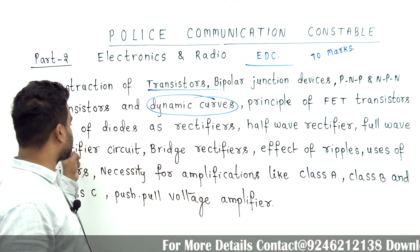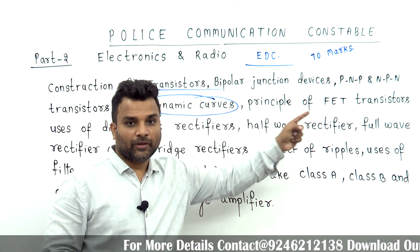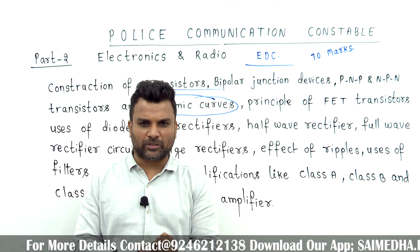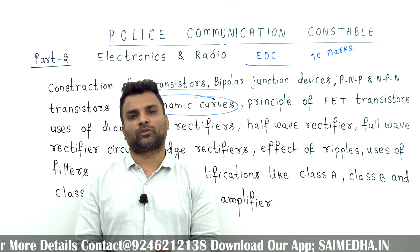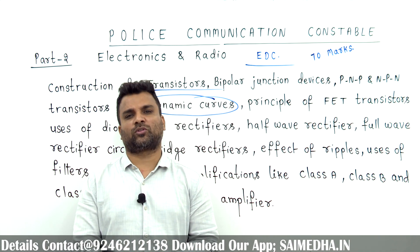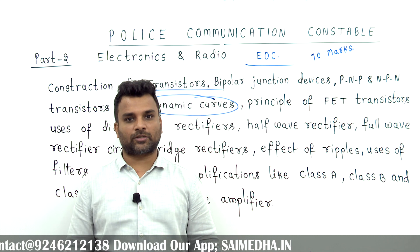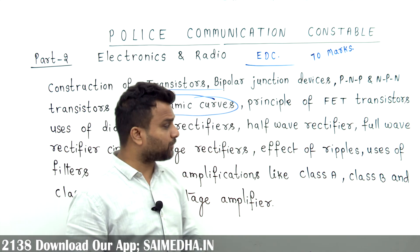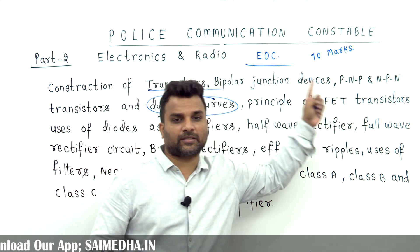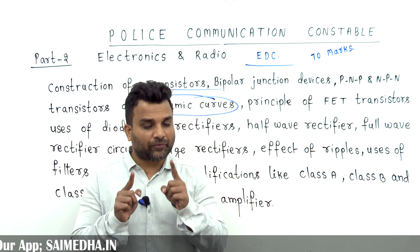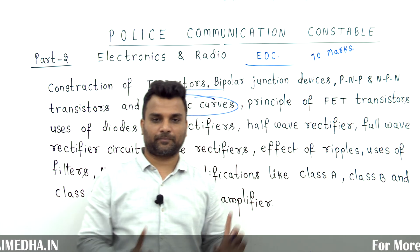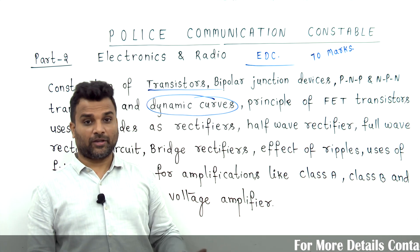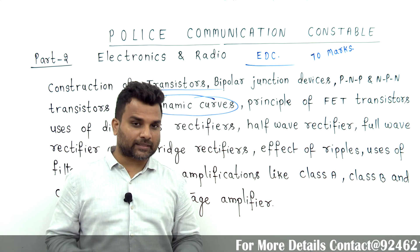Next is the principle of FET transistors — field-effect transistors. We know the input impedance in the transistor. There are thermal runaway and leakage current problems. FET addresses these issues. The next advanced device is the FET. There is also a question: what is transconductance?